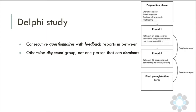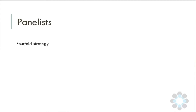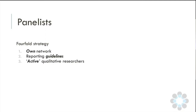Our exact design involved a preparatory phase and two rounds that together fed into the final pre-registration form. We put together a call for panelists using a fourfold strategy. First, I asked steering committee members to suggest four suitable colleagues — people known to be knowledgeable on the topic. We also approached authors of reporting guidelines for qualitative research, and supplemented that with active qualitative researchers, identified by a broad search in Scopus and Web of Science for people who had published at least four papers using qualitative methodology in the last four years.